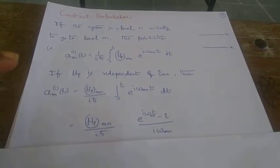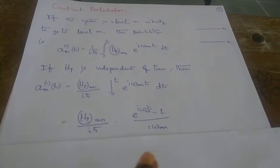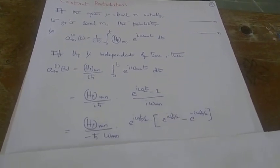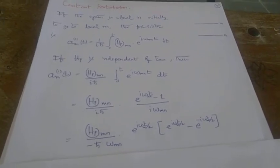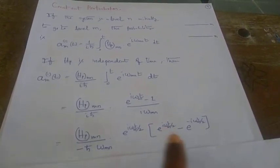When we substitute these proper limits, then we get this integral like this with the limits applied. And then if you pull out this exponential i omega_mn t by 2 as a common factor, then we get this in the bracket.